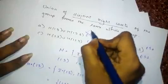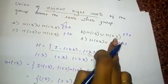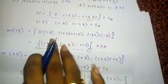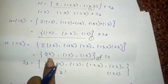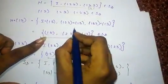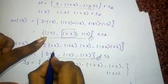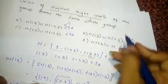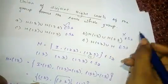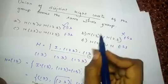This belongs to S3. However, if you look at H(1 3) and H(2 3): (1 3) appears in H(1 3) and (2 3) appears in H(2 3), and there is a common element (2 3) between them. So these two are not disjoint.